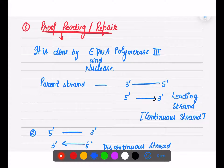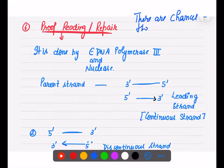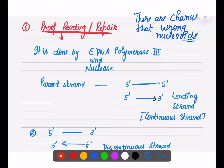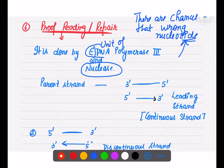After strand synthesis, there is a proofreading and repair mechanism. Sometimes wrong nucleotides can be attached during DNA replication. The epsilon unit of DNA polymerase III, as well as exonuclease, both help in proofreading — detecting and replacing incorrectly incorporated nucleotides.